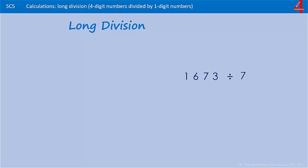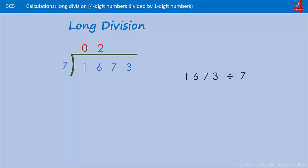We're going to try some four-digit numbers here, but we're still dividing by one digit. Because we have an extra digit, this might help you get the hang of the method. Exactly the same layout — 1673 divided by seven. How many times does seven go into one? It doesn't, we'll put a zero there. How many times does seven go into 16? It goes in twice, and two sevens are 14, so we take that 14 away from the 16, leaving two. Now we bring down the next digit, which is seven.